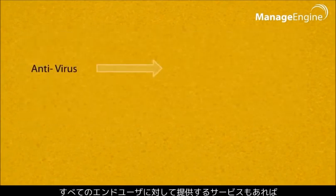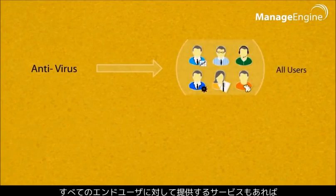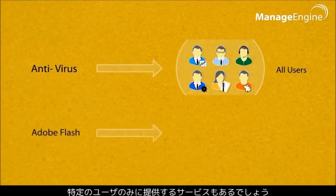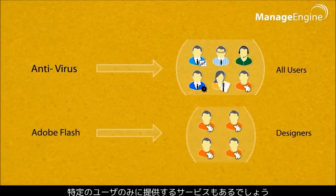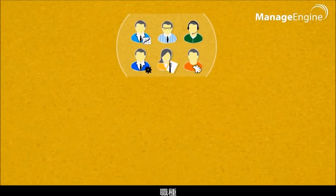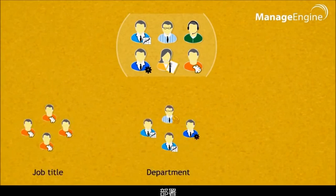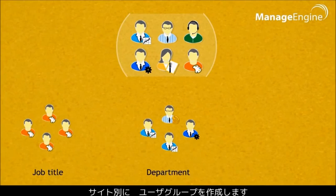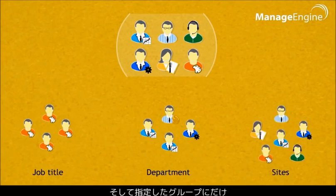Sometimes the service that you offer will cater to the needs of all users, and in some other cases it might be needed by only specific lists of users. In these cases, you can use different groups based on job title, department, or even sites, and list the specific service available for these users.